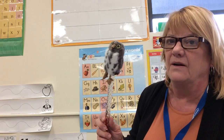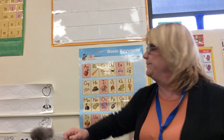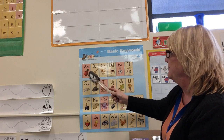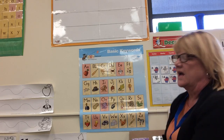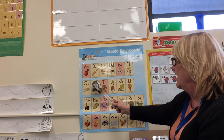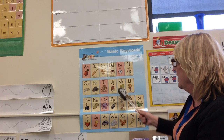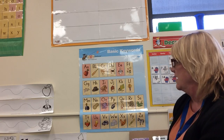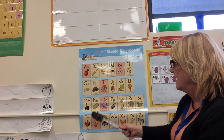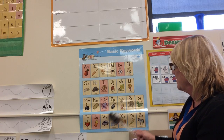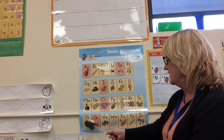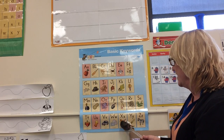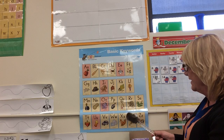Okay, now let's say the alphabet together along with Mr. Baby Echo. A, B, C, D, E, F, G, H, I, J, K, L, M, N, O, P, Q, U, R, S, T, U, V, W, X, Y, and Z.